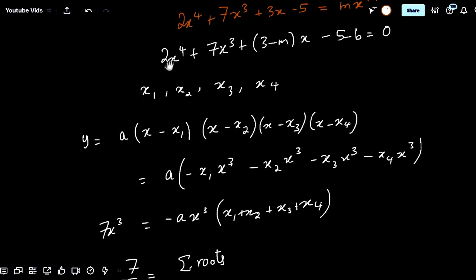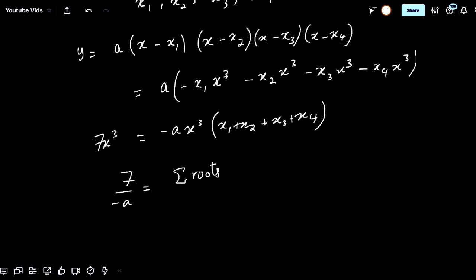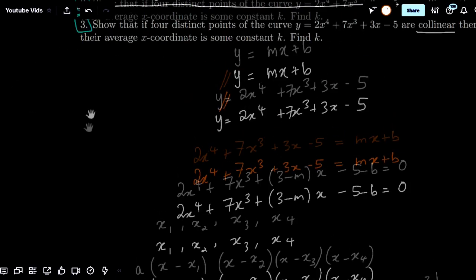And well, we have that a equals 2 here. So x1 plus x2 plus x3 plus x4 is actually minus 7 over 2. And if I divide this by 4, I'm going to get minus 7 over 8. And that's the constant that the problem was asking for.